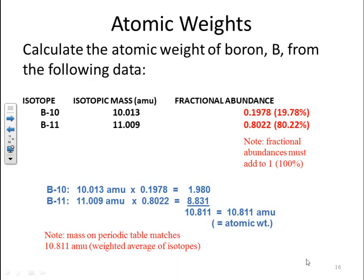Note that the mass on the periodic table matches the 10.811 AMUs that we just calculated. This is the weighted average of the isotopes and also notice that it's closer to the boron-11 as we suspected since 80% of them have boron-11 mass compared to boron-10 mass. Should be able to do some homework on homework 11.